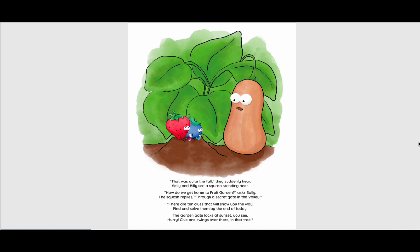That was quite the fall, they suddenly hear. Sally and Billy see a squash standing near. How do we get home to Fruit Garden? Asks Sally. The squash replies, through a secret gate in the valley. There are ten clues that will show you the way. Find and solve them by the end of today. The garden gate locks at sunset, you see. Hurry, clue one swings over there in that tree.